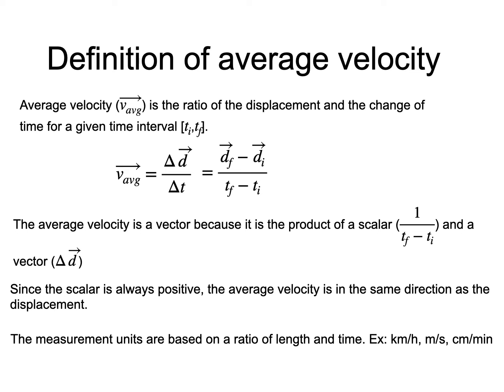The measurement unit for the average velocity is the ratio of the distance unit and the time unit, like for example kilometers per hour or meter per second.